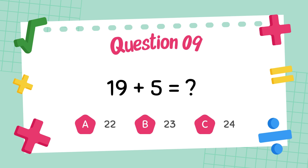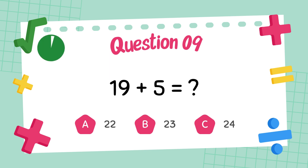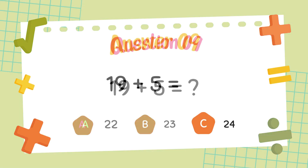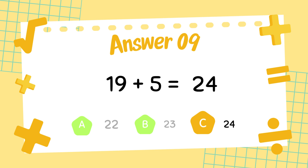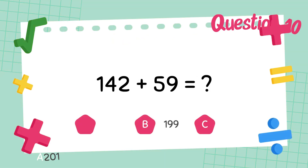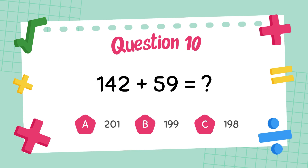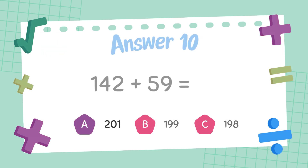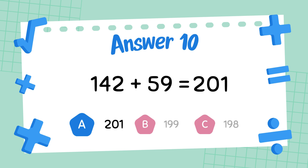What is 19 plus 5? The answer is 24. What is 142 plus 59? The answer is 201.